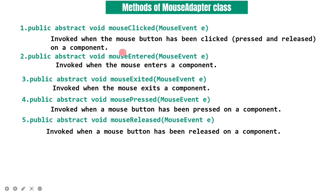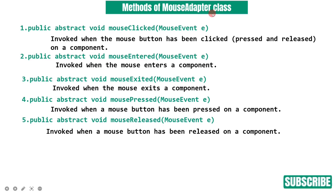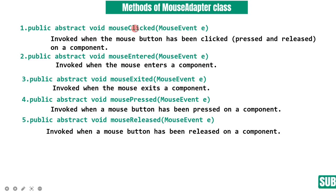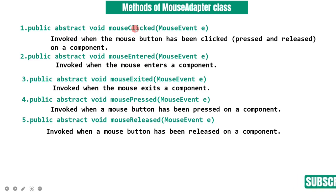The benefit of MouseAdapter class, and why should we use it: if we directly implement the MouseListener interface, we need to provide all method implementations. But if we create a class that extends MouseAdapter, we can implement only the required methods. So the length of the code decreases.